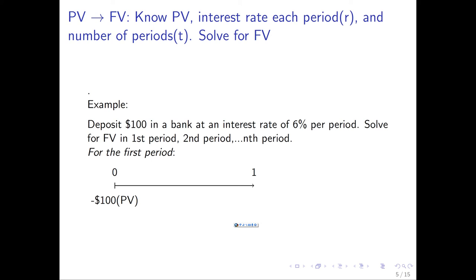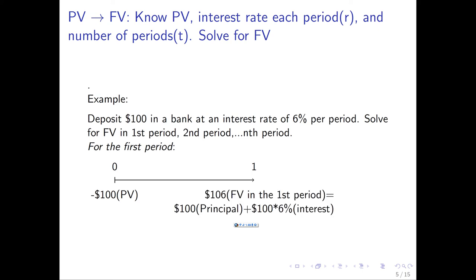In this example, you deposit $100 in a bank at an interest rate of 6% per period. Calculate the future value at the end of period one, period two, and period n. For the first period, how much do you have? It's $106 — that's the initial $100 plus $6 in interest (6% of $100). That's quite simple.